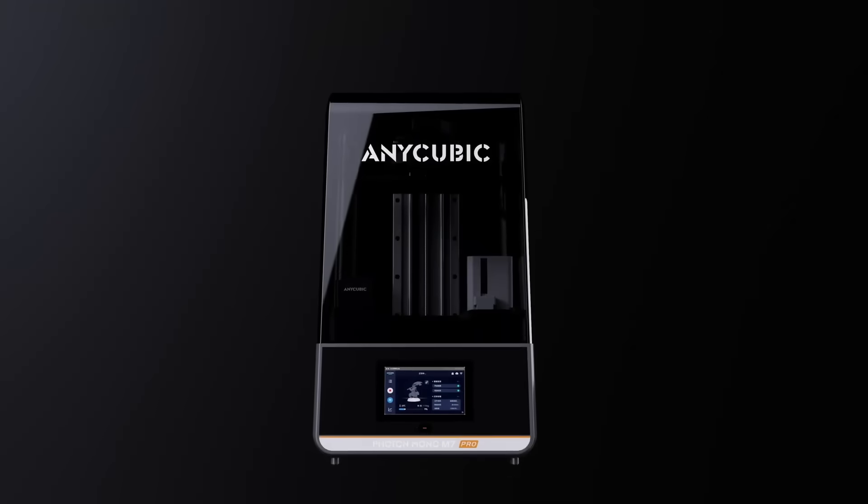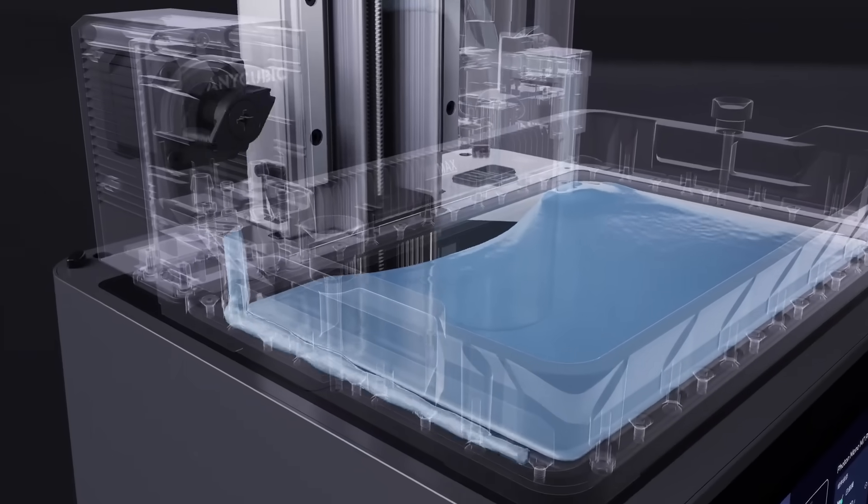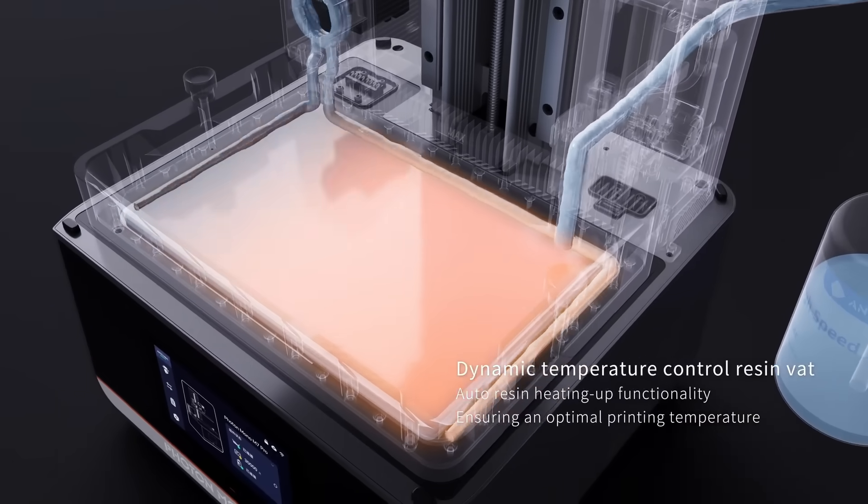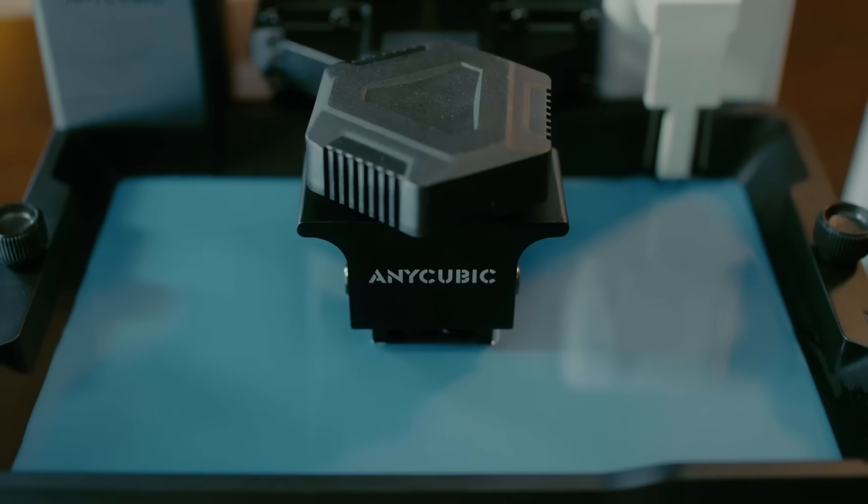There's also the new Mono M7 Pro from Anycubic which comes with a built-in heater. This actually heats the resin via a pump that's connected directly to your vat and while I personally haven't used this, I absolutely hate anything that complicates the cleaning process.